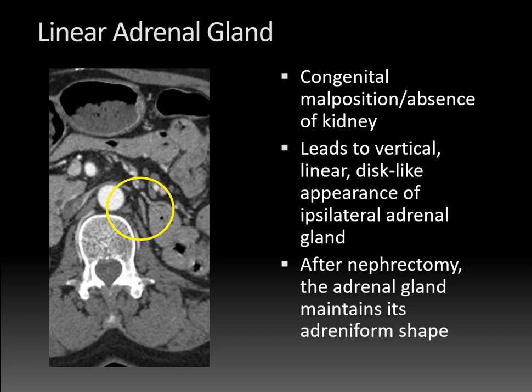After a nephrectomy, the adrenal gland will actually maintain its normal adreniform shape. That's how you can differentiate whether a patient has had a nephrectomy or has congenital absence of a kidney, because you need the normal positioning of the kidney in the renal fossa to get that normal adreniform configuration.